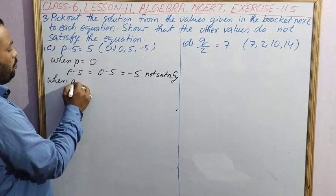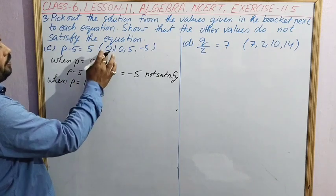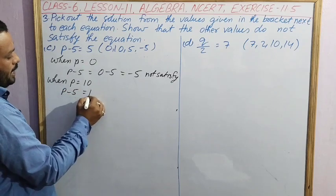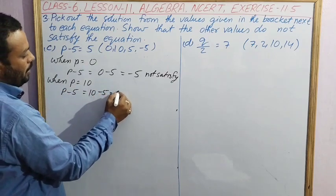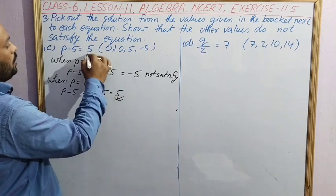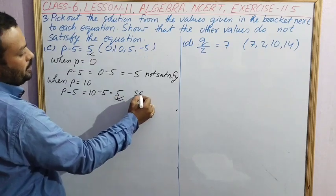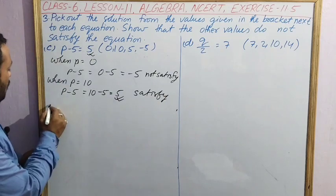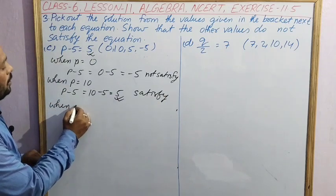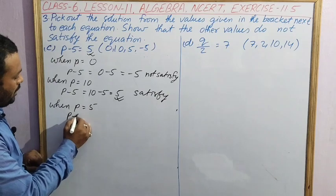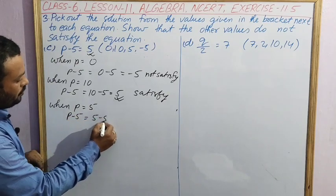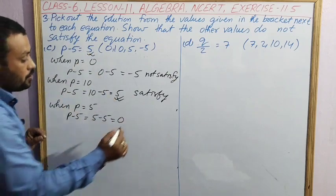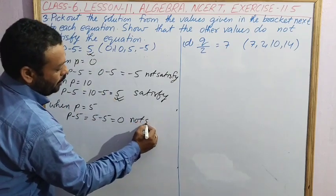When p equal to 10, p minus 5, that is 10 minus 5 is equal to 5. This one is equal to the right hand side, so this one is satisfying the equation. Satisfy. When p equal to 5, p minus 5 equal to 5 minus 5 equal to 0. Left hand side and right hand side is not equal, so this one is not satisfying. Not satisfy.